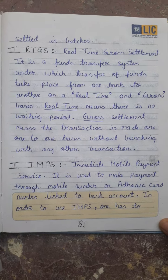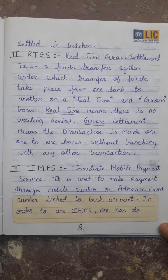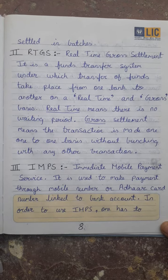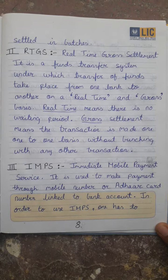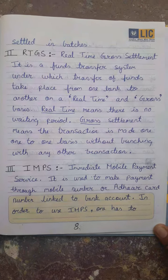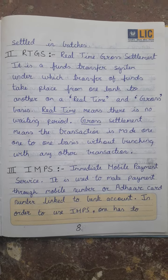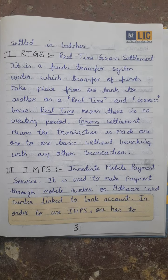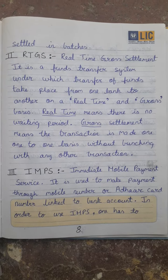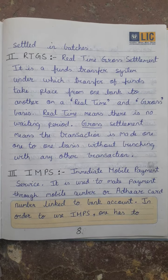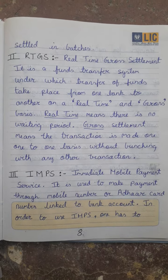The second heading is RTGS. The full form of RTGS is Real-Time Gross Settlement. Under RTGS, funds are transferred from one bank to another on a real-time and gross basis. Real-Time means that there is no waiting period, and gross means that the transaction is made on a one-to-one basis without bunching with any other transaction.